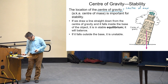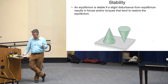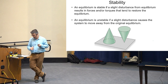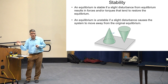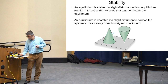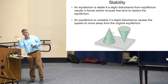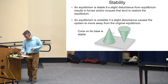An equilibrium is stable if a slight disturbance results in restoring forces and torques — like a cone on its base: push it a little, gravity torques it back. Unstable equilibrium is like a cone balanced on its tip: a small push causes the gravity torque to accelerate it further away — it keeps falling. A cone on its base is stable; a cone on its tip is unstable.